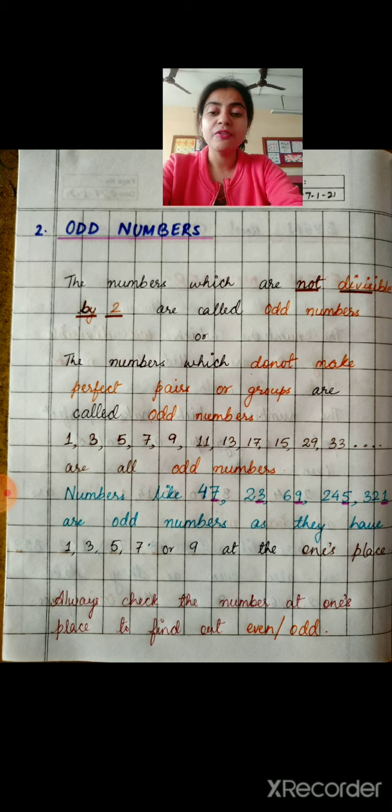So children, we always have to check the number at the 1's place to find out whether it is an odd or even number. हमें हमेशा किसी भी number के last digit को check करना चाहिए. तब भी हम जान सकते हैं कि वो even है या odd.